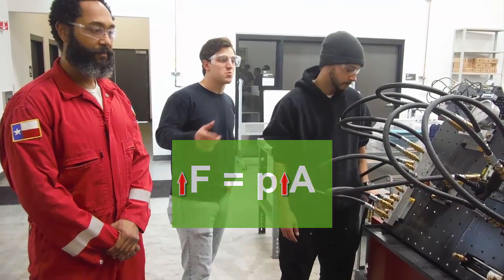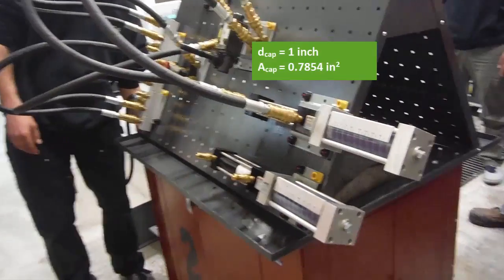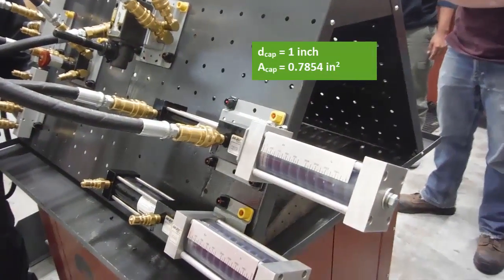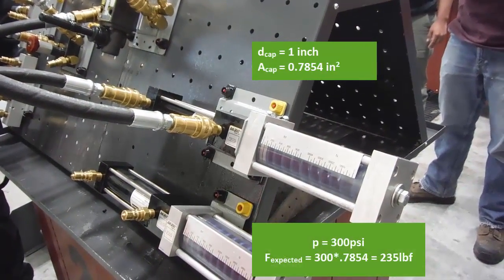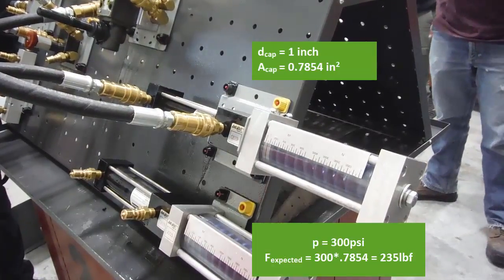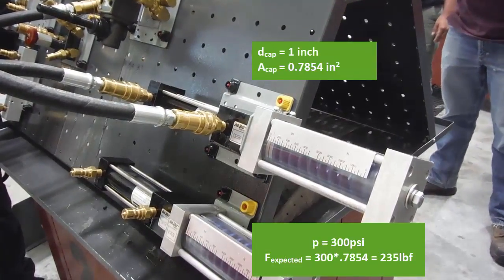So to demonstrate this, we have a 1 inch cylinder of which we're going to be inputting 300 psi of fluid into it. We're expecting 235 pounds force output. Then we're going to double the pressure and we in turn expect to have double the force.